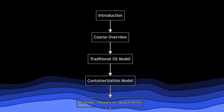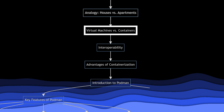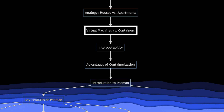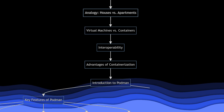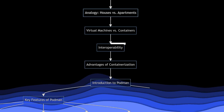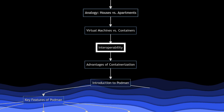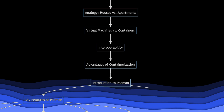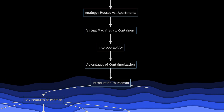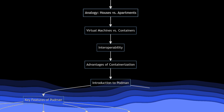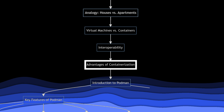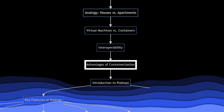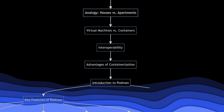Then we'll delve into virtual machines versus containers, examining their distinct management software and functionality. We'll discuss interoperability, highlighting how containers offer greater flexibility compared to virtual machines. From there, we'll cover the advantages of containerization, including portability, scalability, efficiency, and faster startup times.